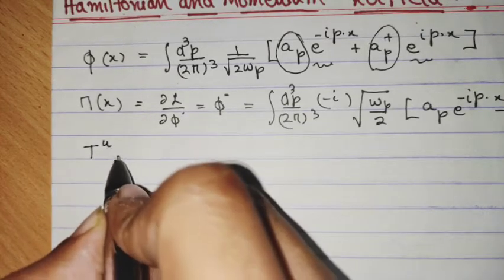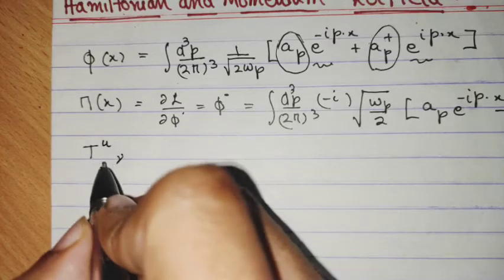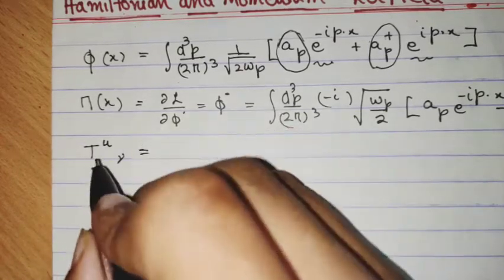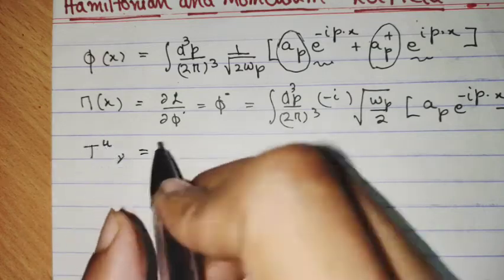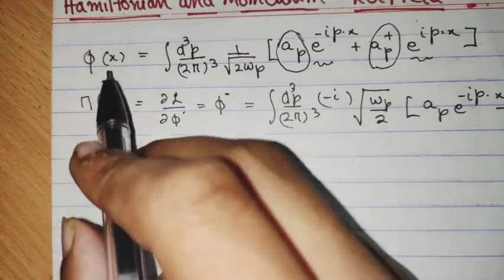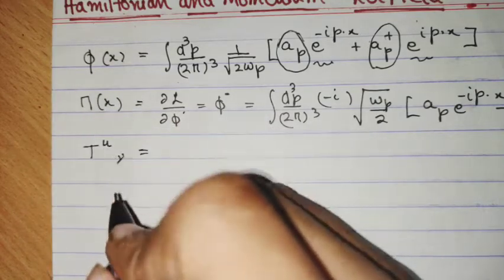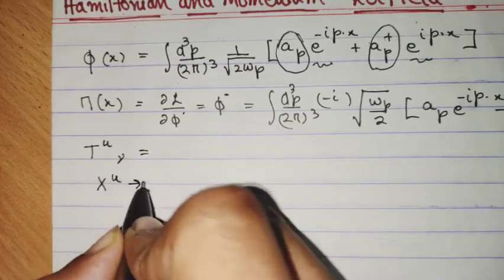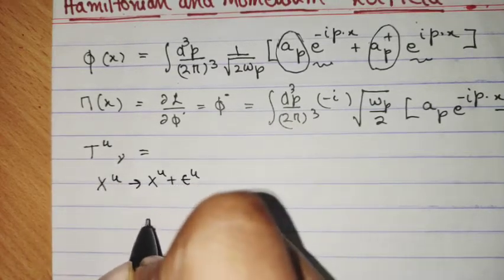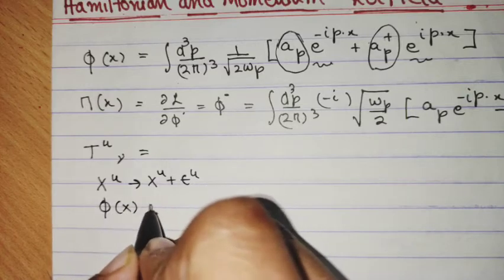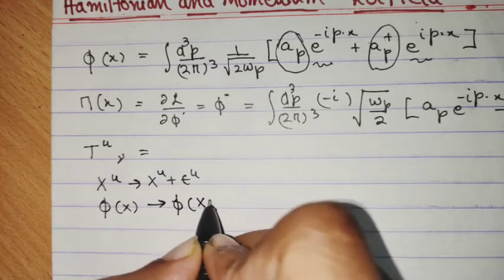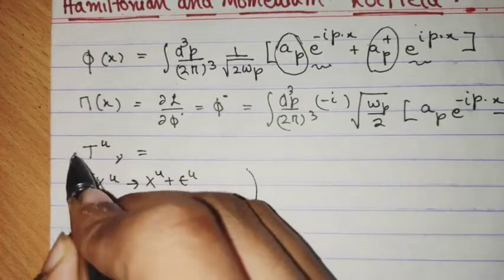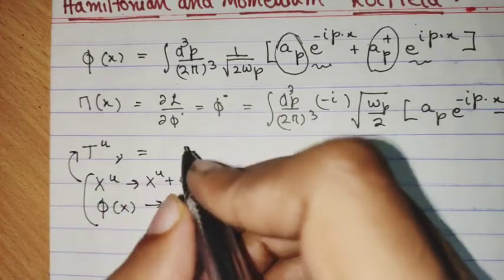As per my previous videos, we had derived that there is a conserved quantity, the energy-momentum tensor T^μν, which was the conserved current corresponding to the symmetry of translation. So x^μ going into x^μ + ε^μ, where φ(x) was actively transformed to φ(x − ε). This gave rise to this particular conserved current.